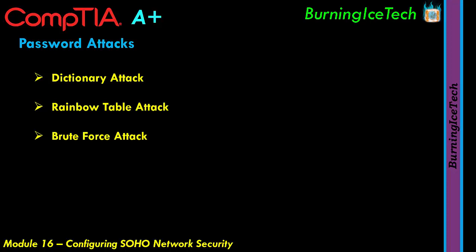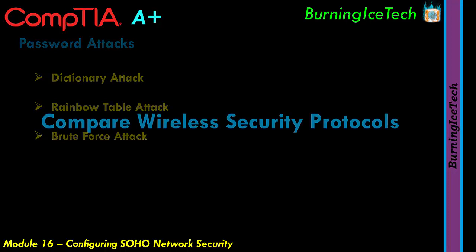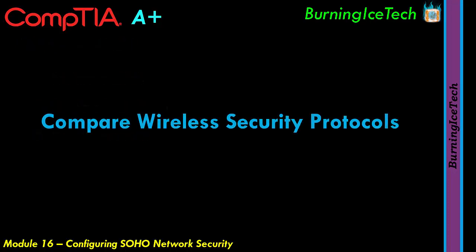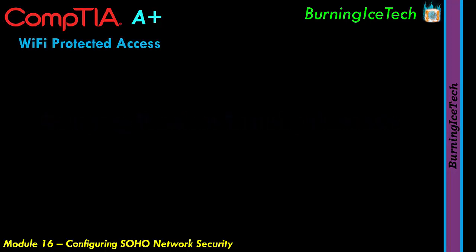That brings an end to the first main section in this module — which I believe is the longest section. The other sections are actually very short and very straightforward. The second main section in this module, which is relatively short, is Compare Wireless Security Protocols. For the most part, there's just one main topic we're going to be talking about in this section: the different kinds of security encryption we get for wireless networks.